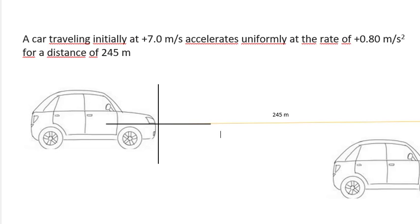Let's do another exercise. A car traveling at 7 meters per second accelerates uniformly at a rate of 0.80 meters per second squared for a distance of 245 meters. Remember, it's important in physics to sketch our problem. This is our car on a coordinate plane with x and y axes. The car travels 245 meters to another point — the distance from here to here is 245 meters.